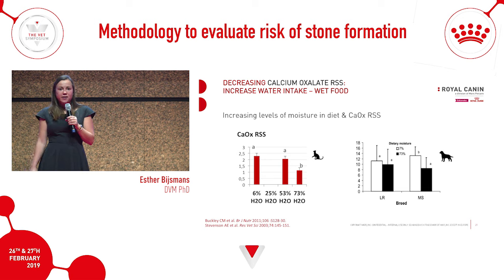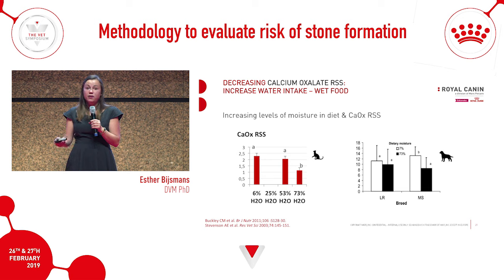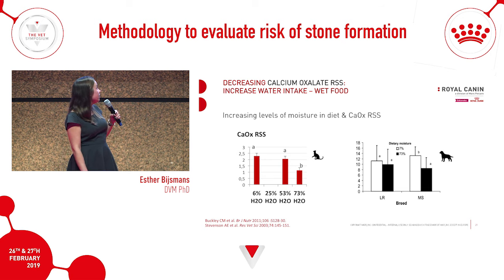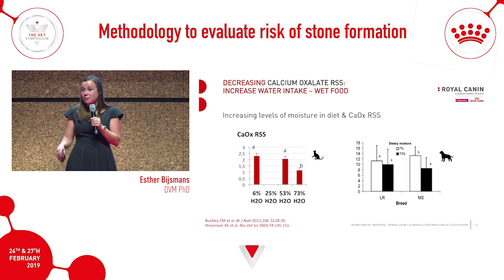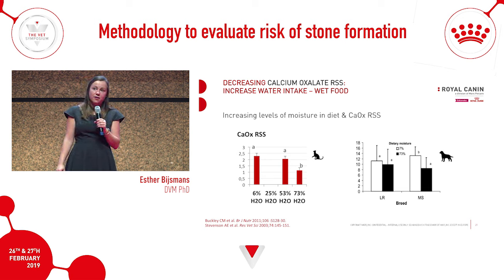For dogs it's more complex. In Labrador retrievers - big dogs who don't often form calcium oxalate stones - no significant difference was found in calcium oxalate RSS between moisture levels, though it was a small study with a visible dip. However, for miniature schnauzers, a breed quite likely to get calcium oxalate stones, there was a significant decrease in calcium oxalate RSS with increased dietary moisture.